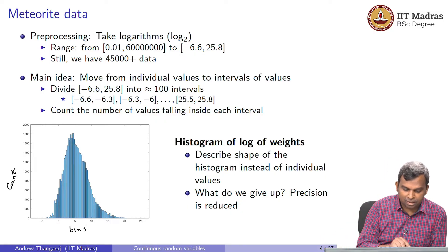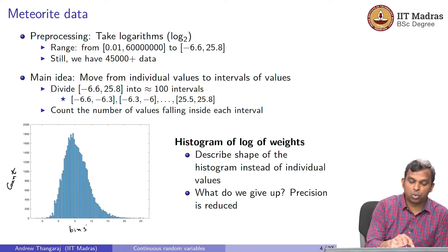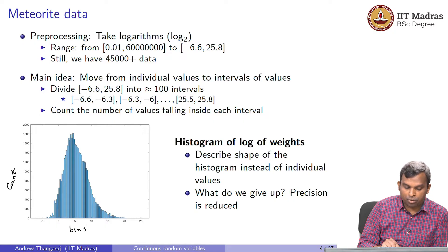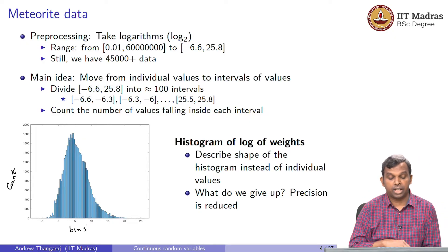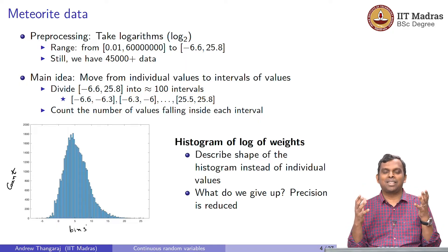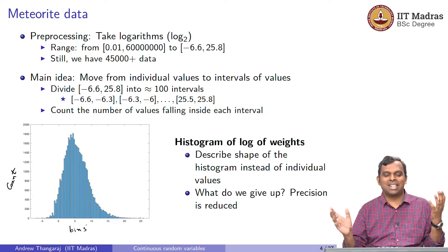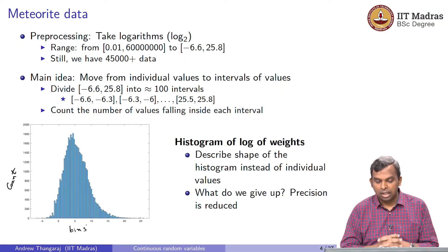For instance, you look at a bin around 5 — that is where the maximum count seems to appear, about 1700 to 1800 meteorites. As you go towards the right, above 15 the count is very low, 100 and below. If you go to minus 5 also, the count is really, really small compared to the 1800. You already see some sort of easy picture to remember in your mind. Somebody gives you 45,000 values spread over a large range, it is very difficult. You take the log, then bin it, and you get this very nice and simple picture.